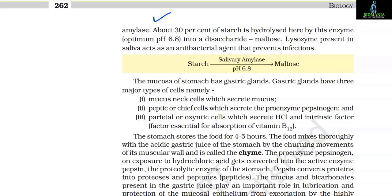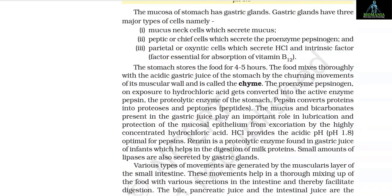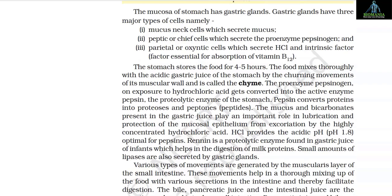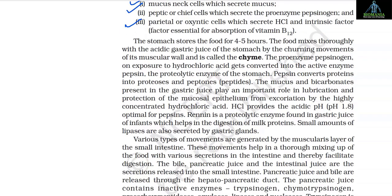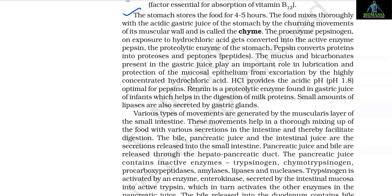The starch is converted into maltose in the presence of salivary amylase at pH 6.8. The mucosa of the stomach has gastric glands with 3 major types of cells: mucus neck cells which secrete mucus; peptic or chief cells which secrete the proenzyme pepsinogen; and parietal or oxyntic cells which secrete HCl and intrinsic factor (a factor essential for absorption of vitamin B12). The stomach stores food for 4–5 hours. The food mixes thoroughly with the acidic gastric juice of the stomach by the churning movements of its muscular wall and is called chyme.